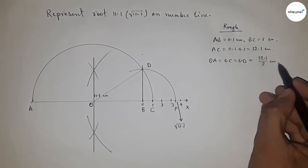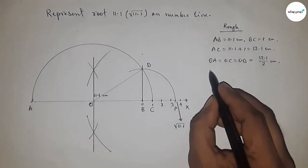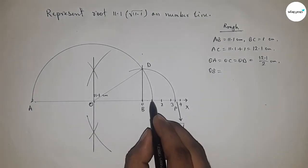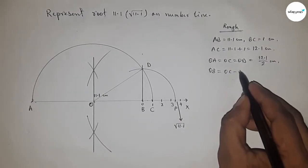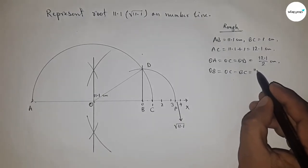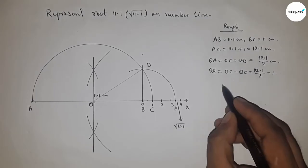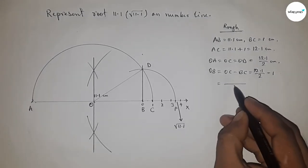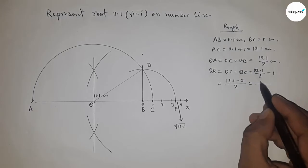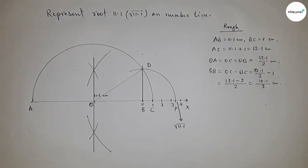Length OB equals OC minus BC. Putting in the values: OB equals 12.1 divided by 2 minus 1, which gives us the value of OB.